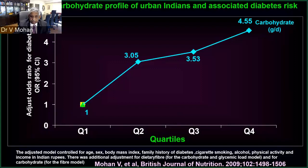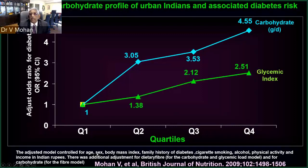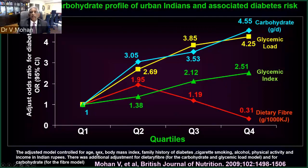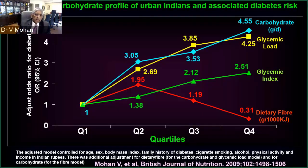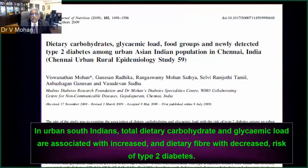This is after adjusting for all factors: family history, BMI, age, sex, cigarette smoking, alcohol, physical activity, and socioeconomic status. For glycemic index, a similar pattern; glycemic load, the same pattern. For dietary fiber, an inverse relationship — the more fiber you take, the less diabetes. So this is a very powerful study. The conclusion was that in urban South Indians, total dietary carbohydrate and glycemic load are associated with increased risk, and dietary fiber with decreased risk, of type 2 diabetes.